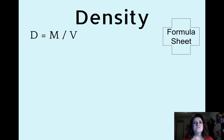Density is the equation D equals M divided by V. M equals D times V and V equals M divided by D.